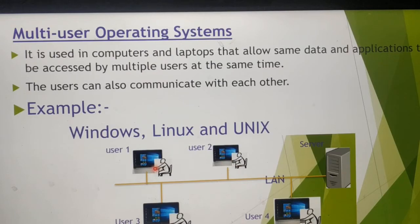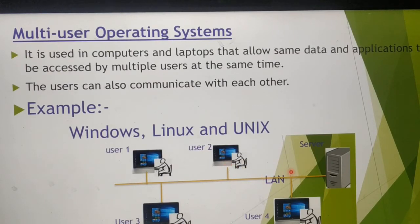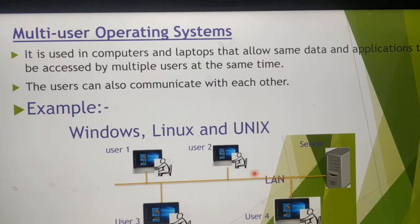Here, multiple users are connected to the server through the LAN connection. LAN means Local Area Network. Through the LAN connection, multiple users are connected to the server, and each user can access information from the server. At the same time, each user can communicate with each other, save information, and access information from the server — all these functionalities can be done in a multi user operating system.